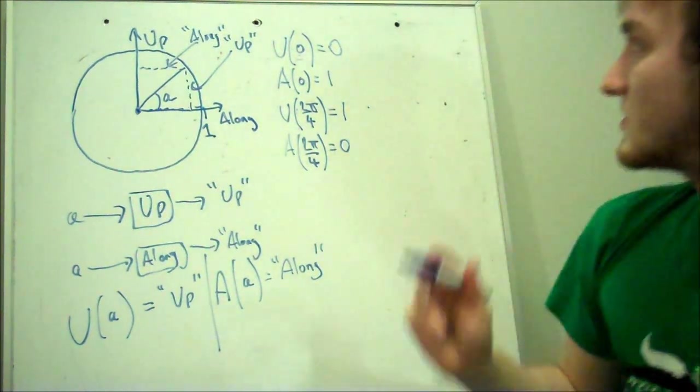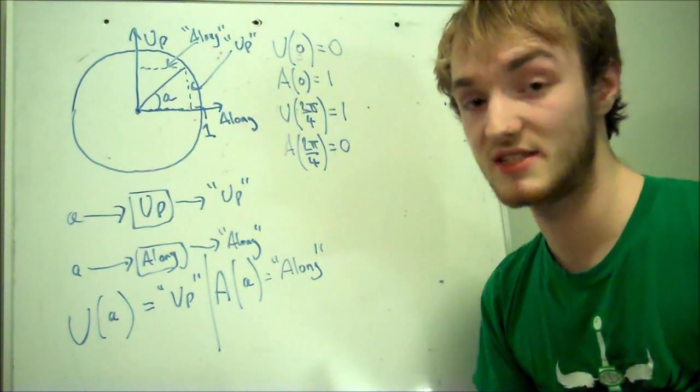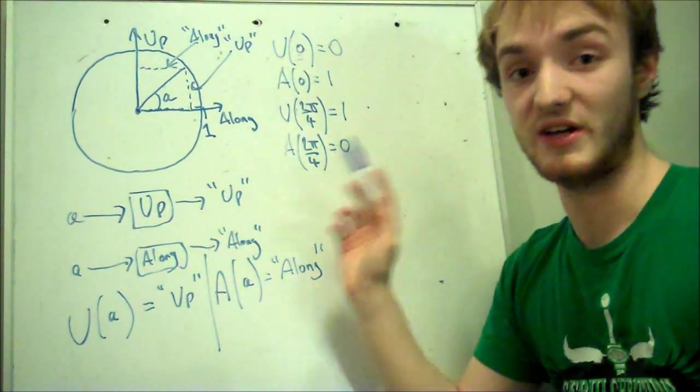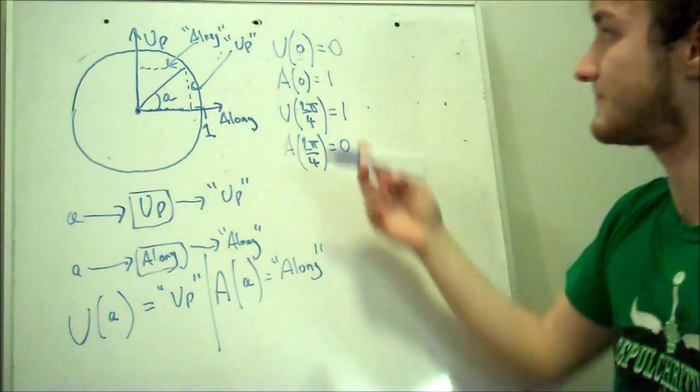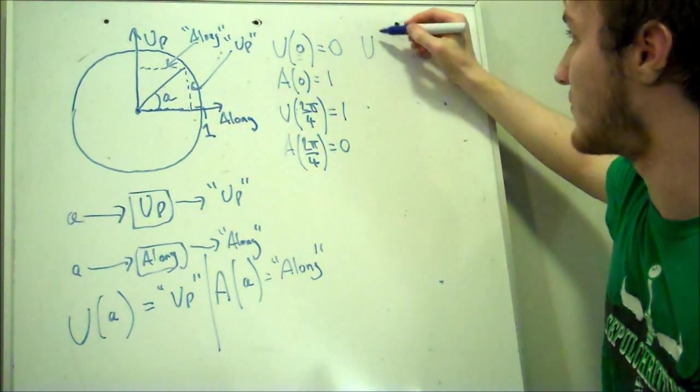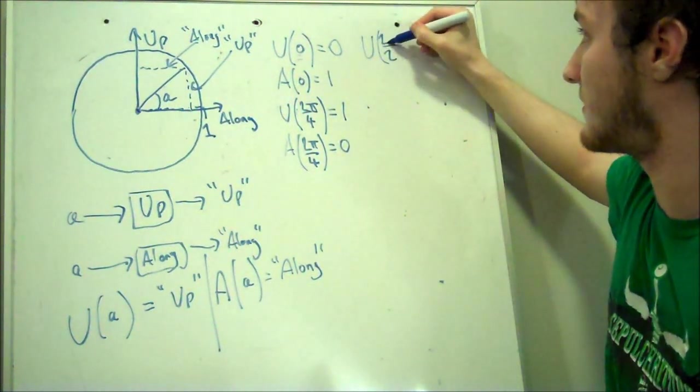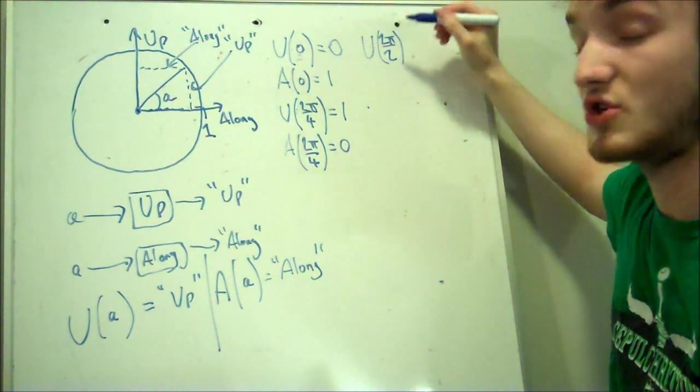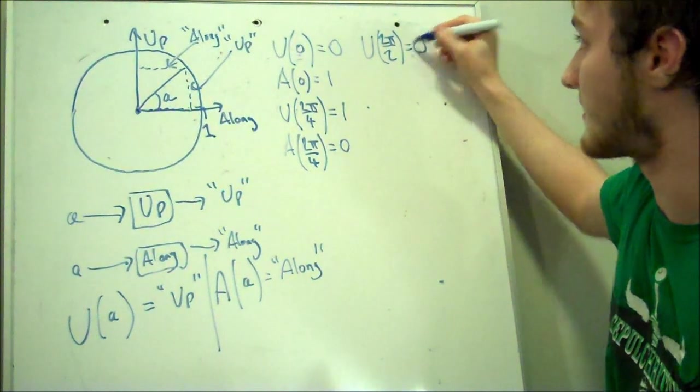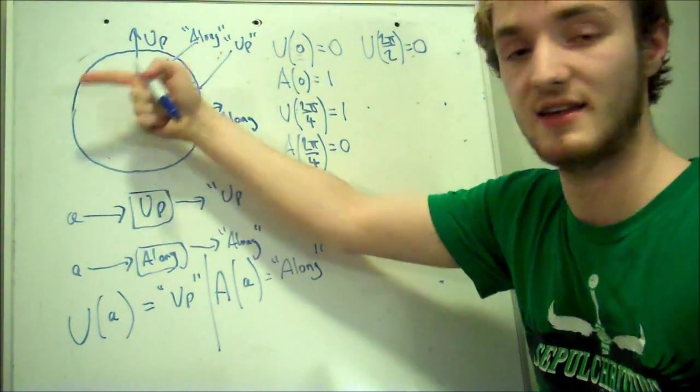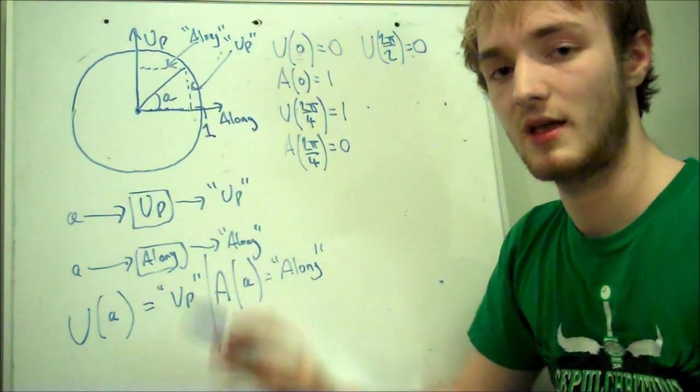Now finally, the most important value to understanding Euler's equation, when we're using this up and along machine, is what is the up and along for half way around? The up for half way around, for two pi over two, which is the same as pi, is going to be nothing. If it's lying flat, it's just going to be pointing in that direction. Nothing at all.